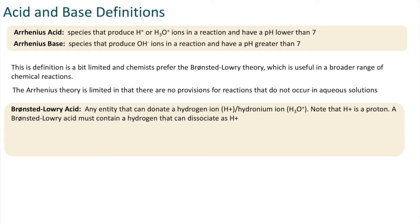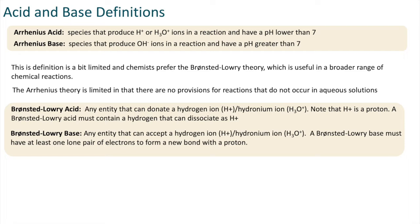A Bronsted-Lowry acid must contain a hydrogen that can dissociate as H+. A Bronsted-Lowry base is any entity that can accept a hydrogen or hydronium ion and must have at least one lone pair of electrons to form a new bond with a proton.